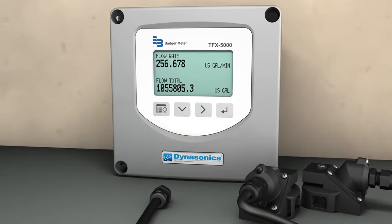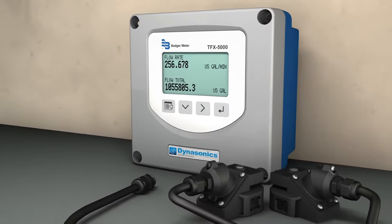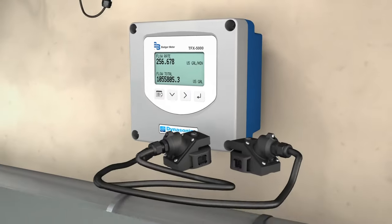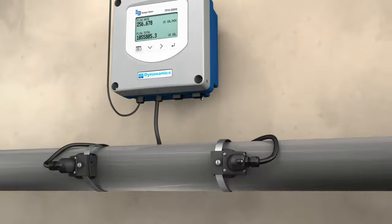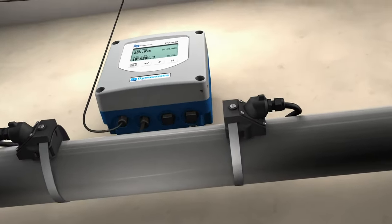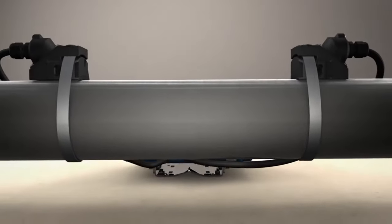Clamp on flow meters using transit time ultrasonic technology are being rapidly deployed for their versatility. These meters have transducers that mount to the outside of the pipe and use ultrasonic technology to measure the velocity of liquid moving through the pipe.